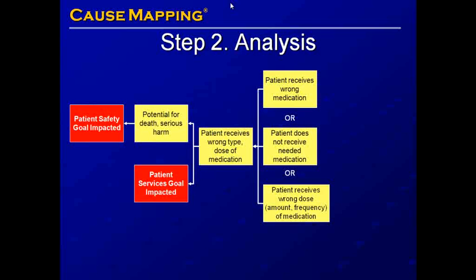Once we've reached this step in the cause map, it becomes apparent that we're looking at a process issue. We're looking at errors that occur with prescribing, preparing, and giving medication. So we're going to take a break from the cause map and move on to process mapping — we're going to map the medication administration process.